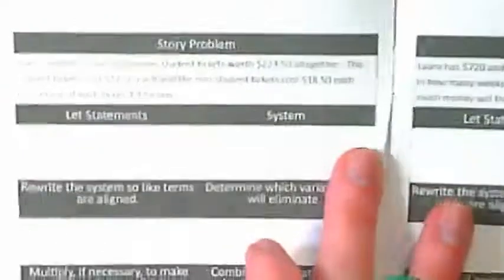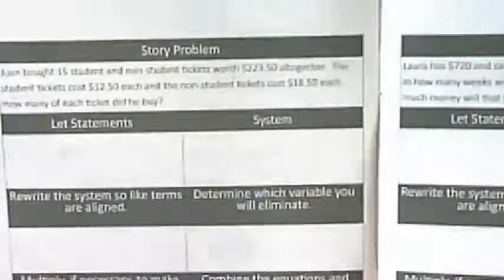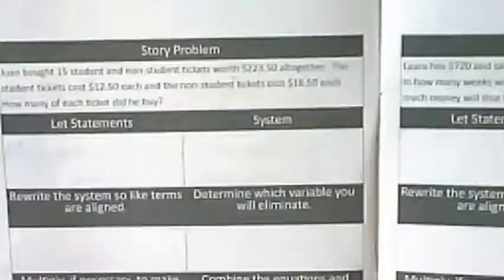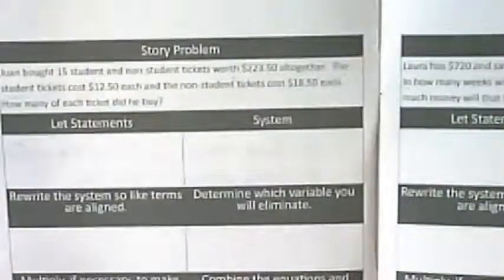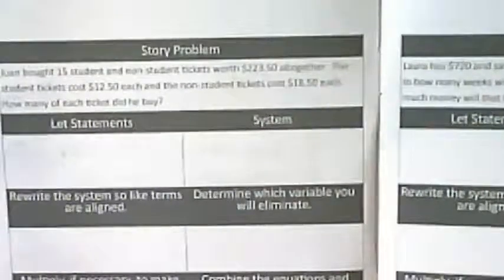In this problem, we have about 15 student and non-student tickets worth $223.50 altogether. The student tickets cost $12.50 each, and the non-student tickets cost $18.50 each. How many of each ticket did he buy?